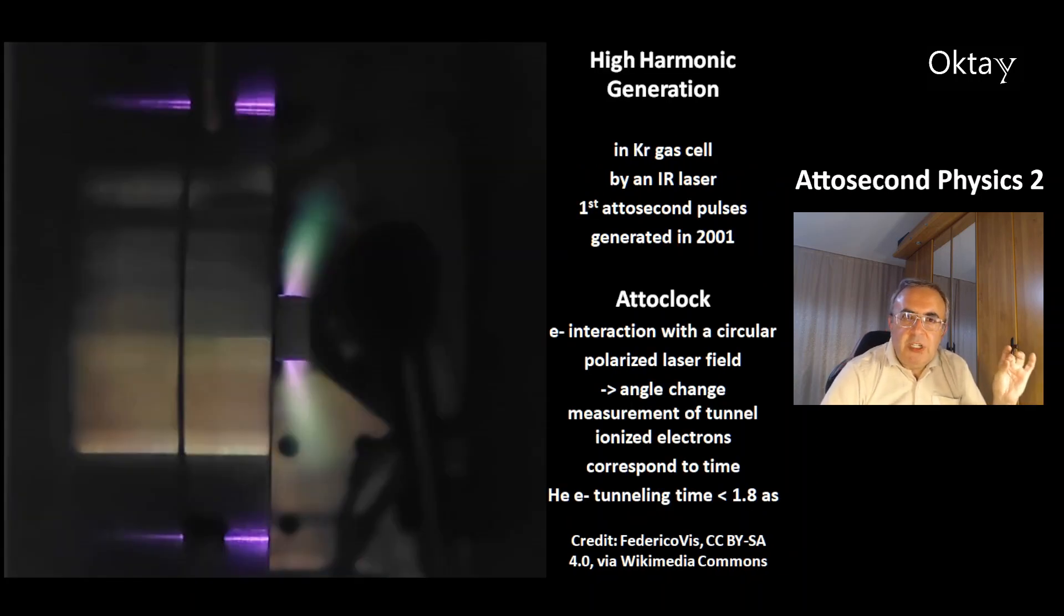This is a picture of high harmonic generation in a krypton gas cell by infrared laser. That was the first attosecond pulse generated in 2001. And there is a method called AttoClock. It uses the electron interaction with a circular polarized laser field. This causes an angle change of the tunnel ionized electrons. And this is measured.